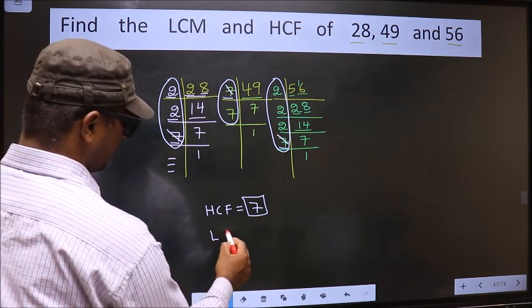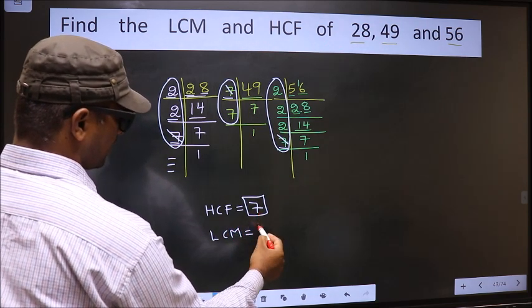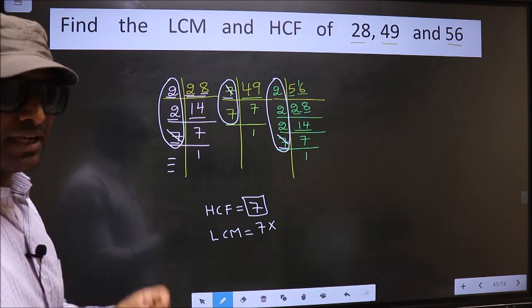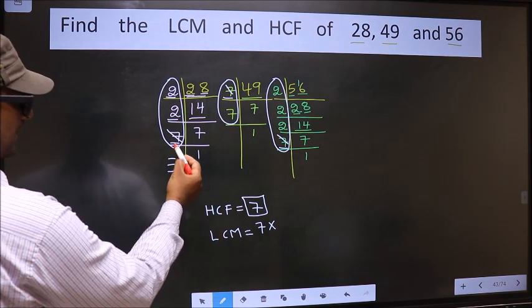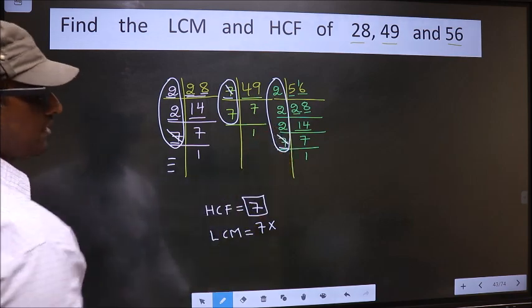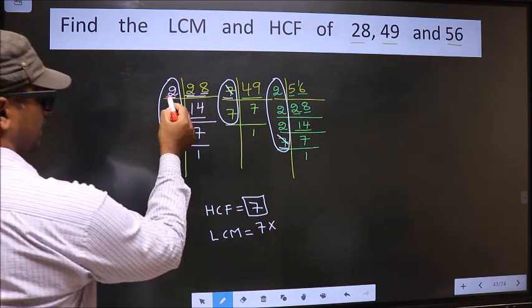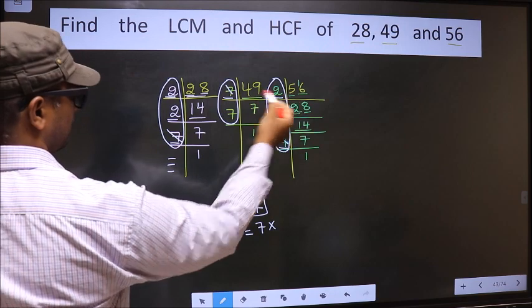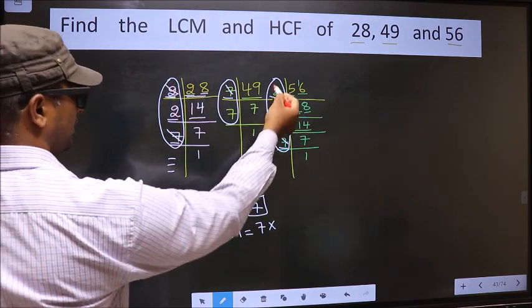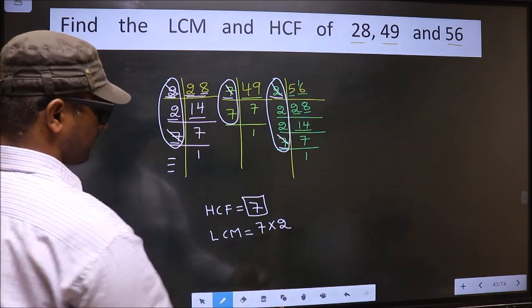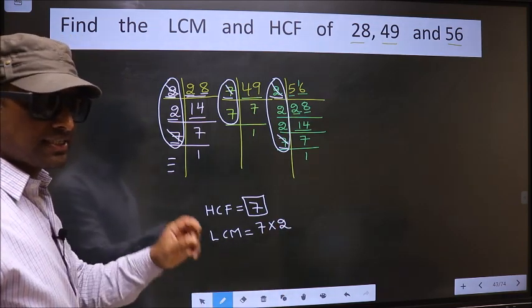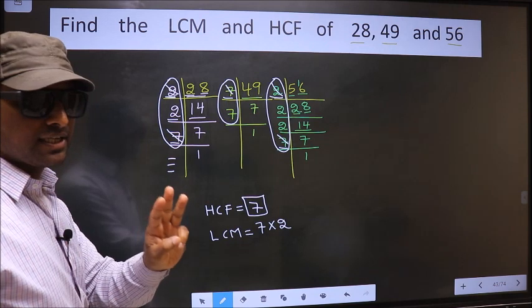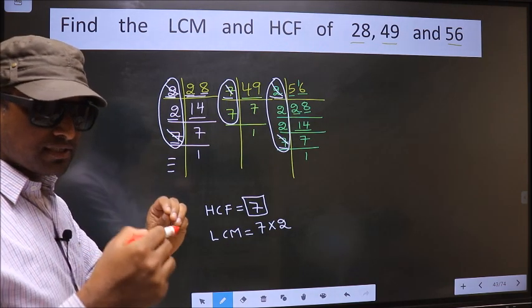Now to get LCM. Whatever HCF we got, to that we should multiply by the numbers which appeared either once or twice in these 3 places. What I mean is, here we have 2. Do we have 2 here? No. Next place, do we have 2 here? Yes. 2 appeared in 2 places, so you cut 2 and write here. For LCM, even if the number is present in 1 place or 2 places, still you will cut and write here. Whereas HCF, it should be compulsory present in all the 3 places. Understood the difference?